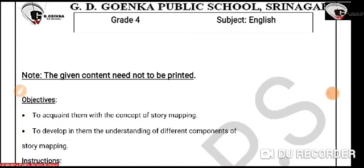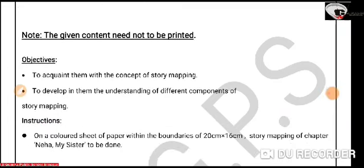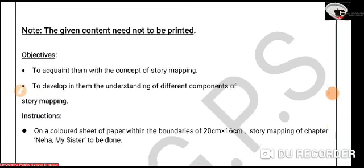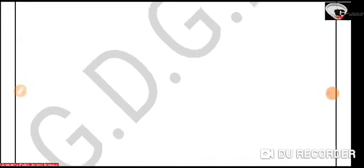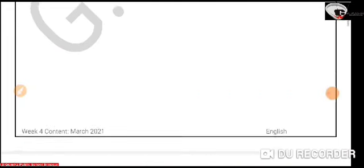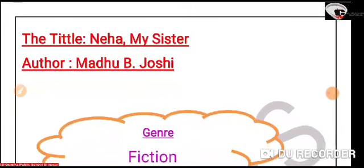When we read a story, there are more than one part. We have the title, the author, the setting, the characters, the problem, the beginning, the middle and the end, and of course the solution. Today we'll be doing the story mapping for the chapter Neha, My Sister.